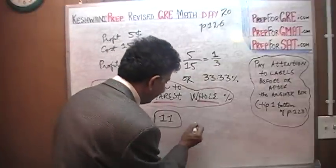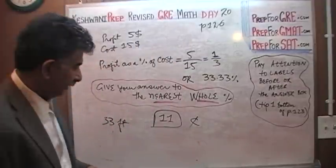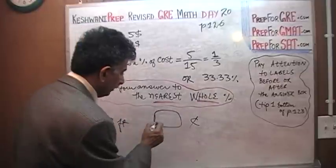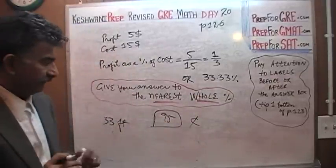If outside it says cents, then we have to put it in cents. 95. That's it. 95 cents.